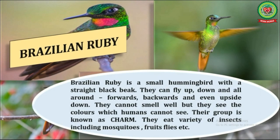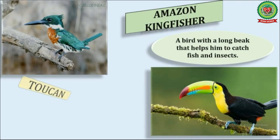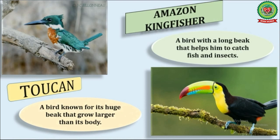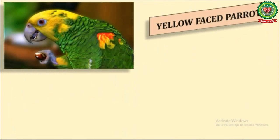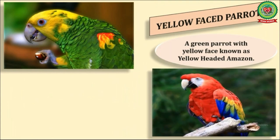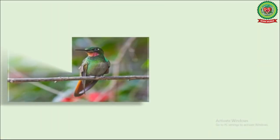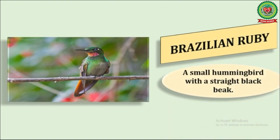Now students, as we have discussed about the birds found in the Amazon rainforest, let's have a recall. Number one: Amazon Kingfisher — a bird with a long beak that helps it catch fish and insects. Number two: Toucan — a bird known for its huge beak that grows larger than its body. Number three: Yellow-faced Parrot — a green parrot with a yellow face, also known as Yellow-headed Amazon. Number four: Scarlet Macaw — the most beautiful member of the parrot family with red, blue, and yellow feathers. Number five: Brazilian Ruby — a small hummingbird with a straight black beak.